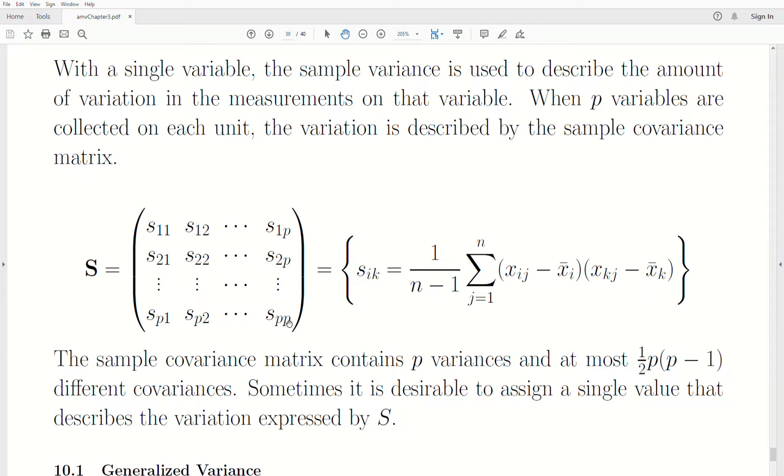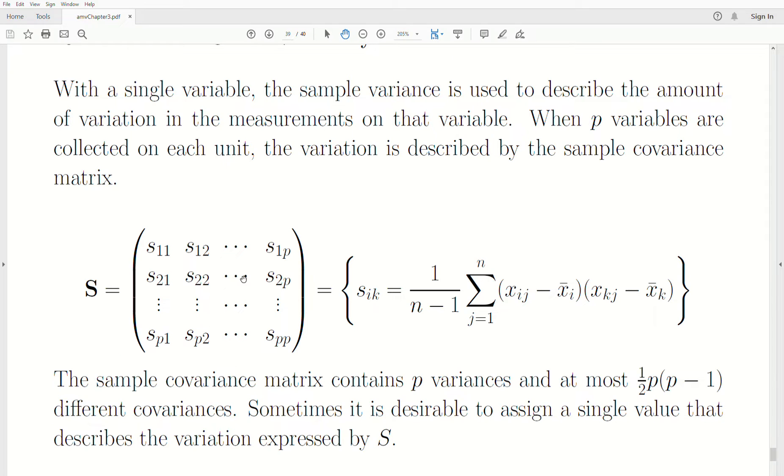So it has the variances down the diagonal, the covariances in the off diagonal, and it's represented by this number here on the right side of the equation. Now, there's a lot of numbers here. There's p variances, and there's one half times p times p minus one unique covariances. It's symmetric, so the bottom half is symmetric to the transpose. But is there a way that we can use one number that kind of summarizes all the variability in our data? And there are. There's actually more than one. We're going to cover two of them.